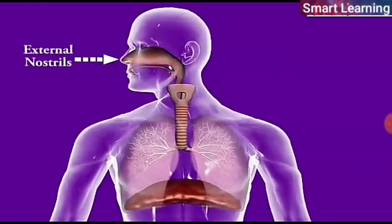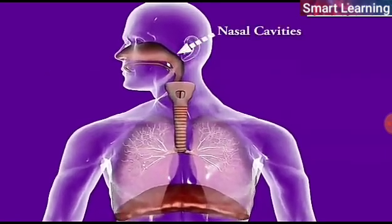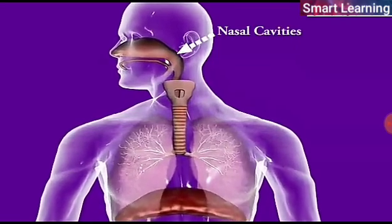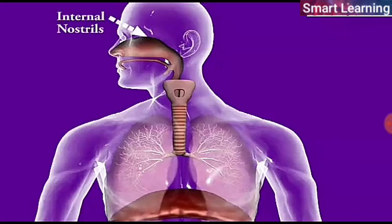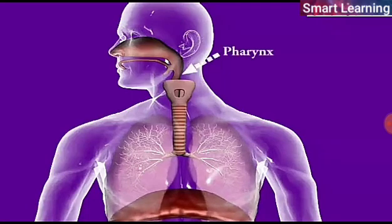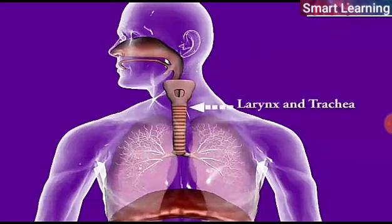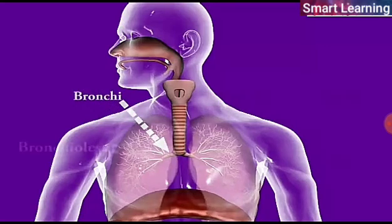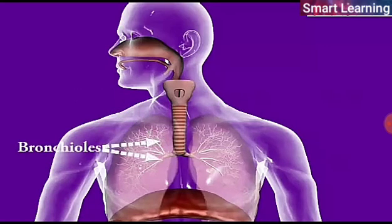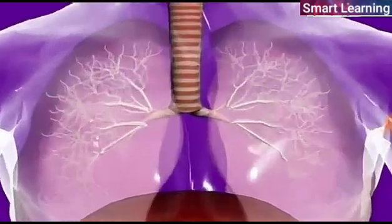Parts of the body involved in the respiratory process are: external nostrils, nasal cavities, internal nostrils, pharynx, larynx, and trachea. The respiratory organs also include a pair of lungs which have bronchi, bronchioles, and alveolar sacs.